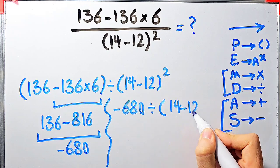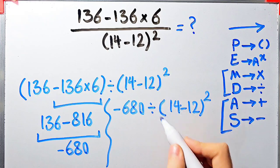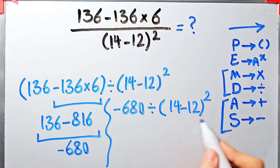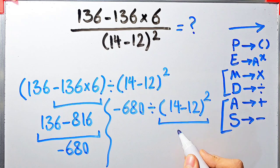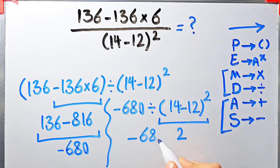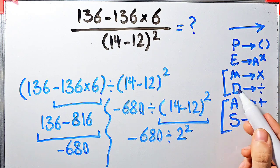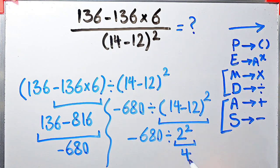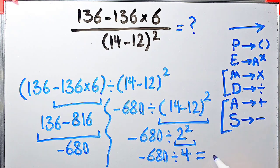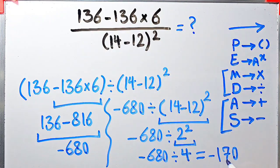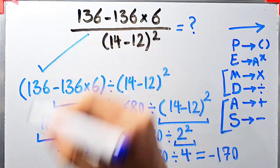Now the question is: negative 680 divided by open parentheses 14 minus 12 close parentheses, then all of them to the power of 2. We simplify the parentheses: 14 minus 12 equals 2. Now the question is: negative 680 divided by 2 to the power of 2. We have division and exponent — first we simplify the exponent because it has higher priority. 2 to the power of 2 equals 4. Negative 680 divided by 4 equals negative 170. The final answer of this question equals negative 170.